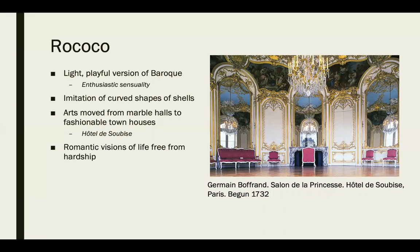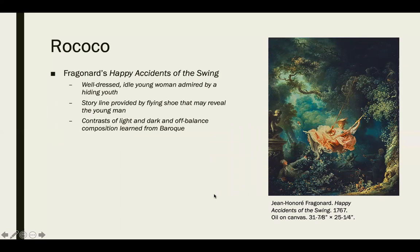Rococo's romantic visions free us from a life of hardship — it's meant to be light, playful, and pleasant rather than hard, moody, and dark. The most notable Rococo piece is Fragonard's Happy Accidents of the Swing — lush green surroundings, a playful and sensual girl swinging in a big pink dress, with a figure watching from below. A really great example of the Rococo style. That's all for lesson 17.